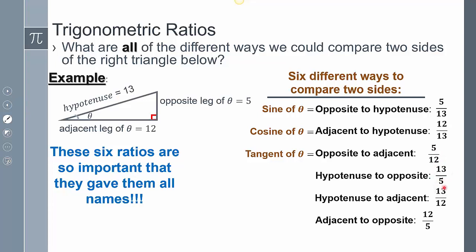The ratio that's hypotenuse to the opposite we call cosecant, the hypotenuse to adjacent we call secant, and the adjacent to opposite we call cotangent. Looking at sine (5/13) and cosecant (13/5), those are reciprocals. Sine and cosecant are reciprocals of each other, cosine and secant are reciprocals of each other, and tangent and cotangent are reciprocals of each other.